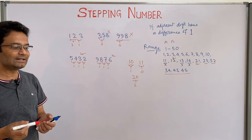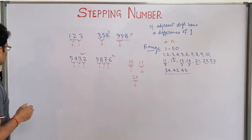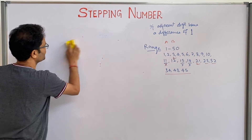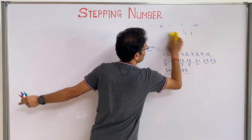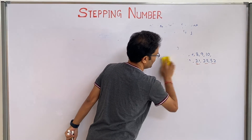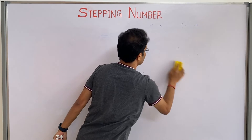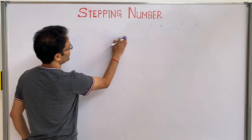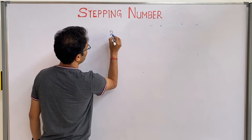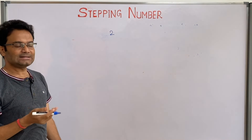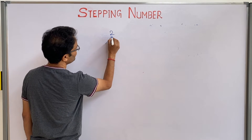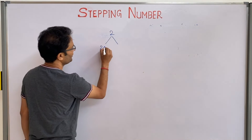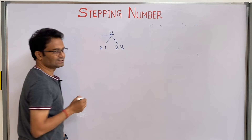We will see how we can generate stepping numbers. The logic is very easy. Starting from digit 2, what are the stepping numbers? 2 itself, then 21 and 23 are stepping numbers. How we calculate is simple logic: if you want to generate the next stepping number starting with 2, take 2 as it is and append 2 minus 1 (which is 1), and also append 2 plus 1 (which is 3).